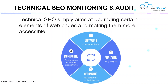Next is technical SEO monitoring and auditing. Technical SEO aims at upgrading certain elements of web pages and making them more accessible. These elements are: crawling — getting useful data that your Google spider extracts from your site; analyzing — figuring out your data insights and how your site is performing; optimizing — making required changes to your website; and monitoring — tracking your performances, indexing, and organic traffic.